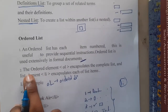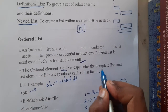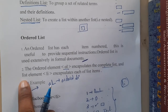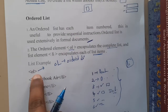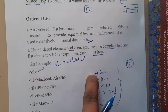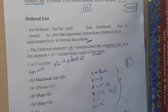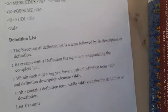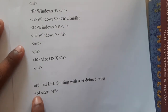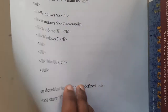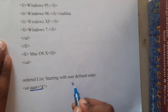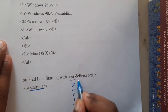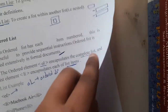The ordered list element is ol, encapsulating the complete list, and li encapsulates each individual item. If you don't specify anything, numbers will automatically start from 1, 2, 3, 4, 5. But if you want to start from a particular number, you can specify it — for example, ol start=4 — so the first item will be numbered 4, then 5, 6, 7, and so on.